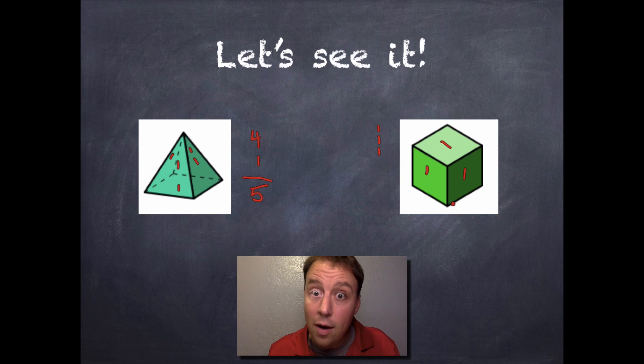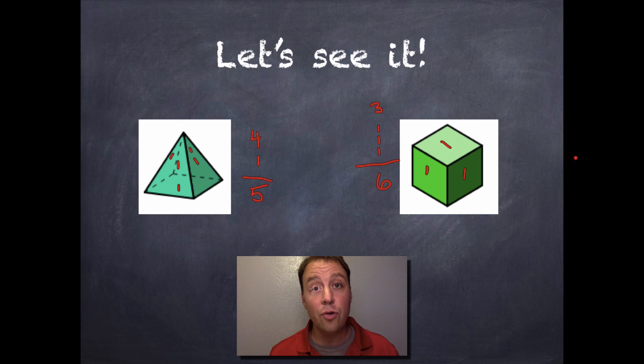So in a cube, how many faces are there? Well, we've got one, two, three that we can see in this picture, and then one, two, three that we cannot see in this picture. There are six faces on a cube.